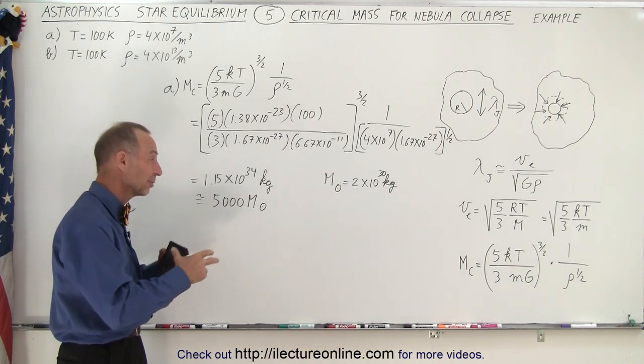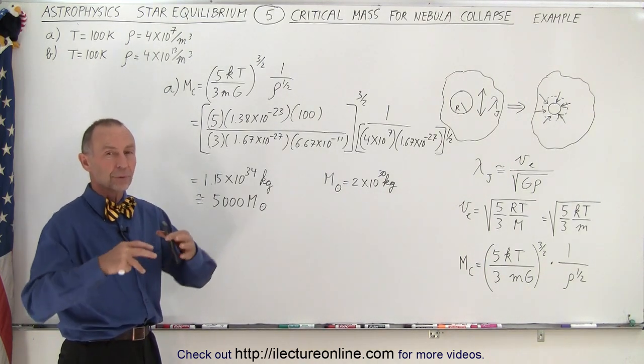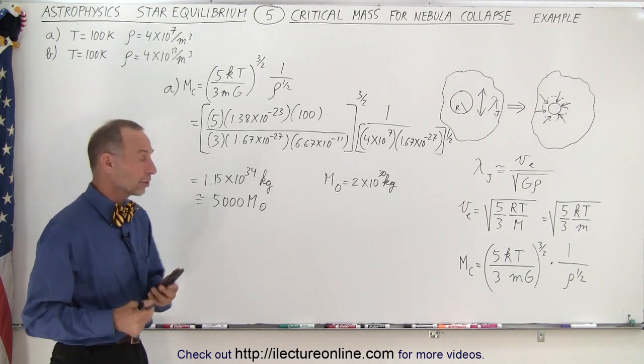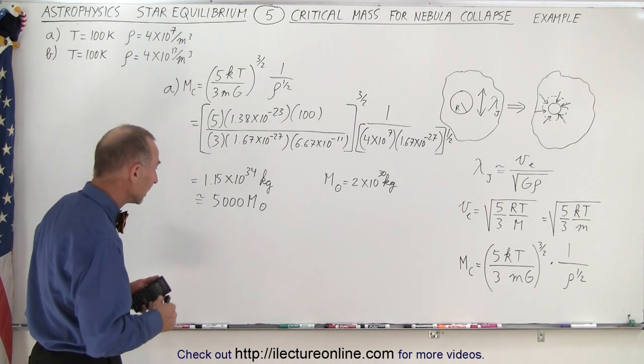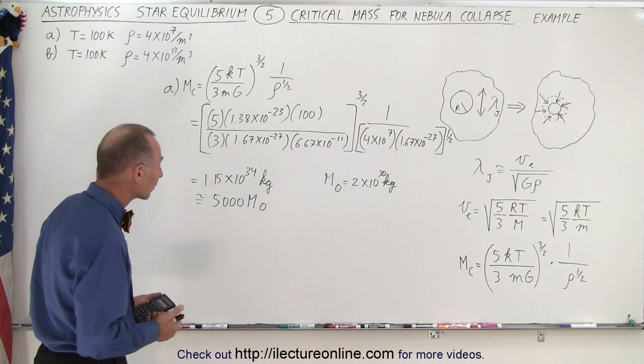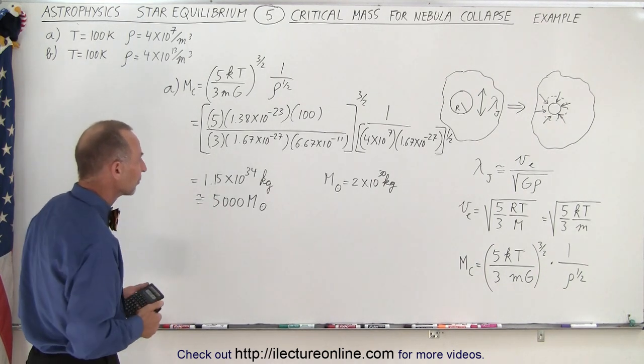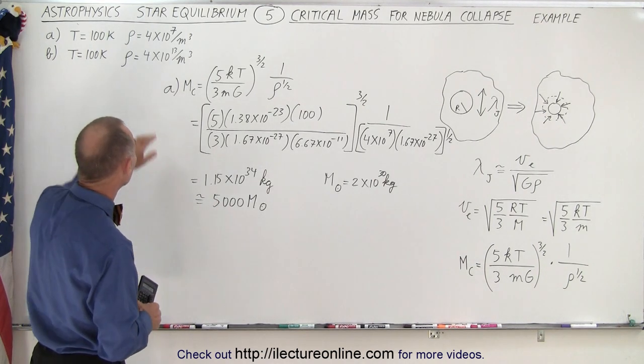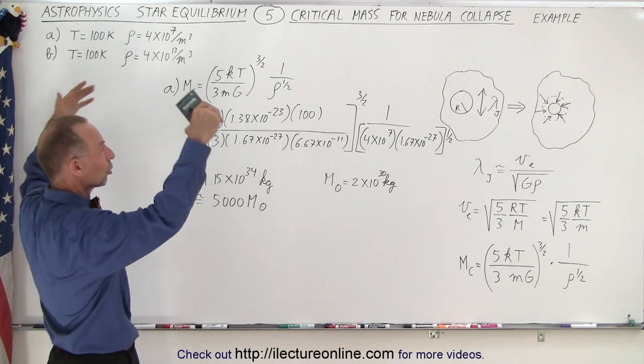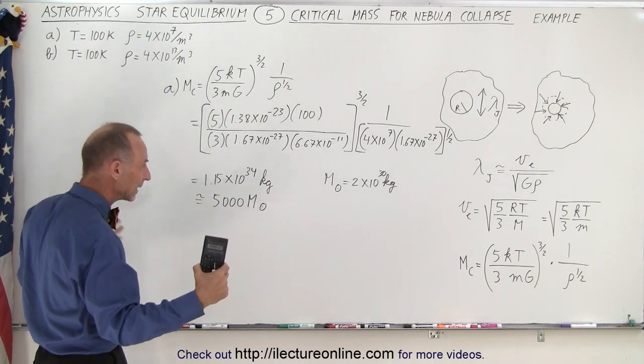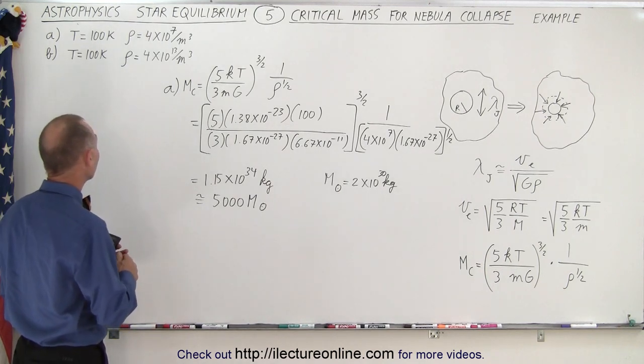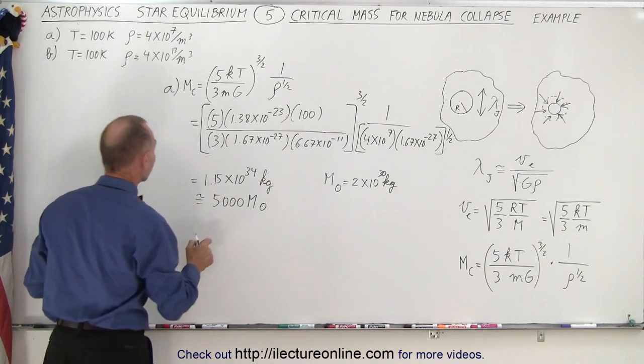So the mass of that molecular cloud, the minimum mass required would be about 5,000 times the mass of the sun. So if something like this collapses, you probably end up with some sort of star cluster. And of course, we see a lot of star clusters in our galaxy and in other galaxies. So that's the kind of situation you would end up with when you have a smaller density. You need a much larger cloud of gas to begin that collapse.